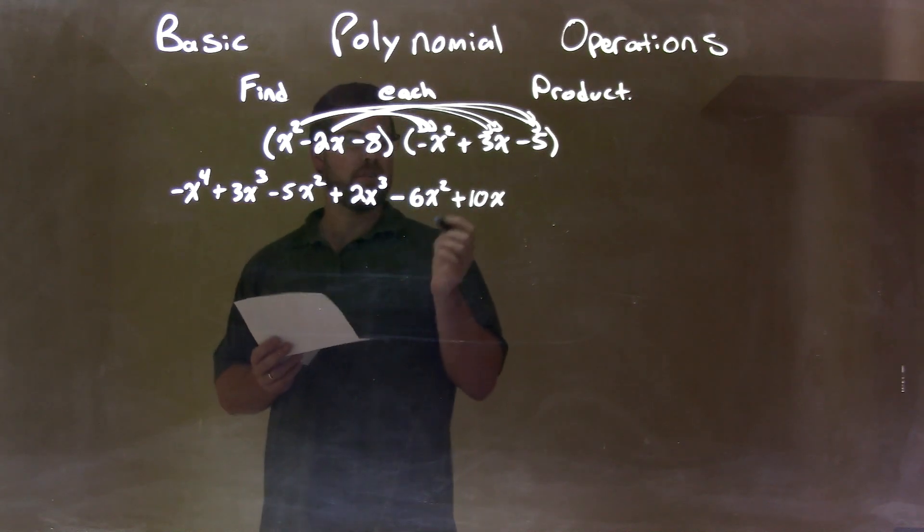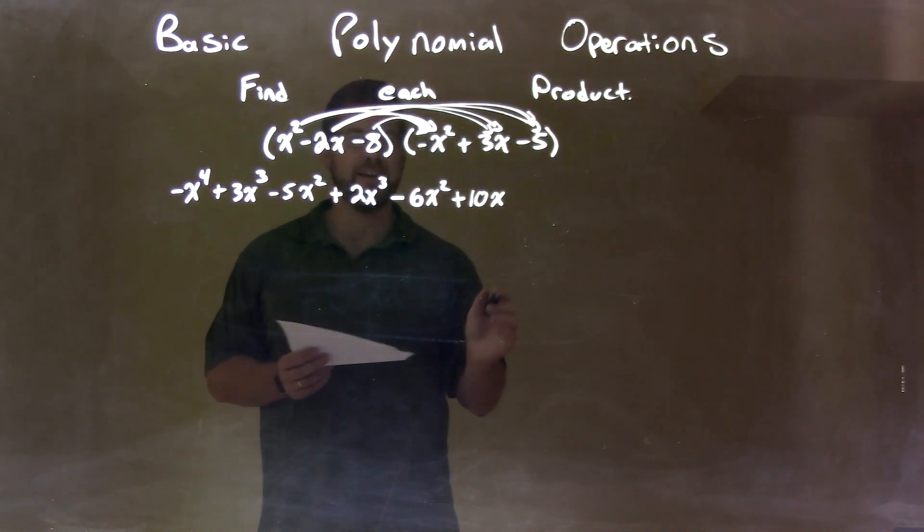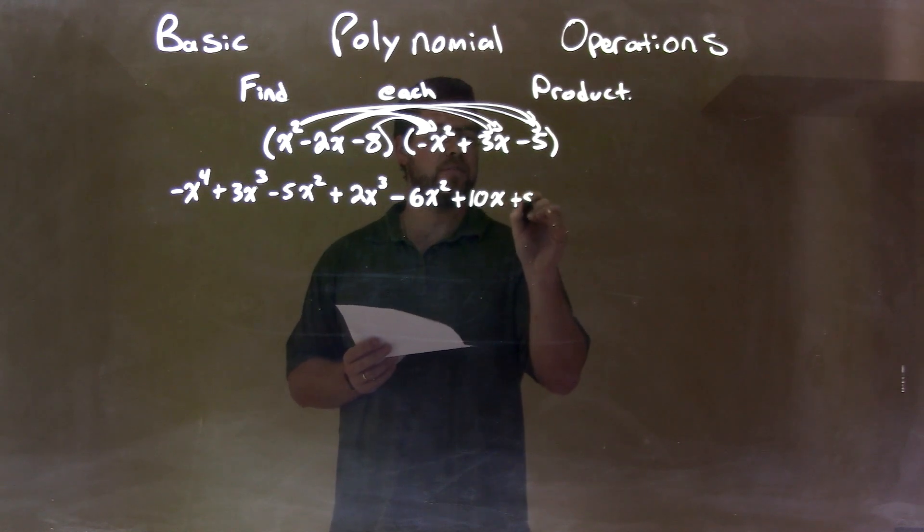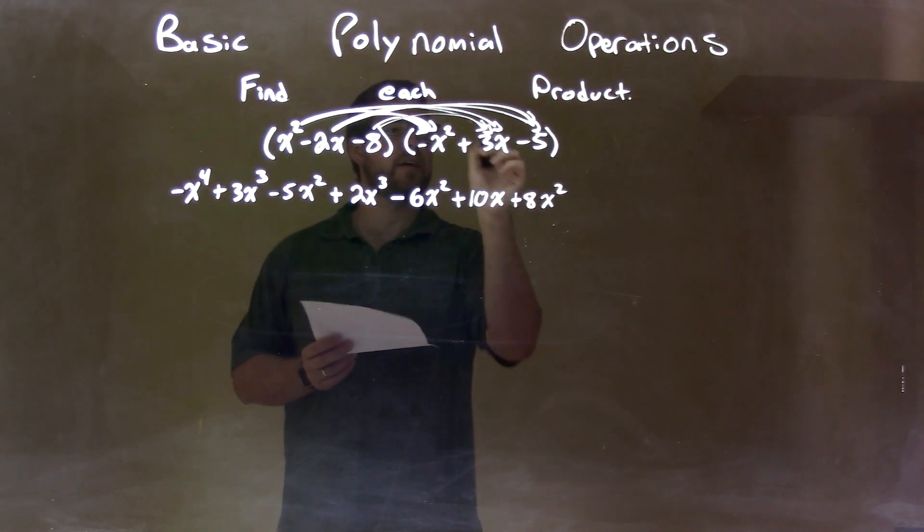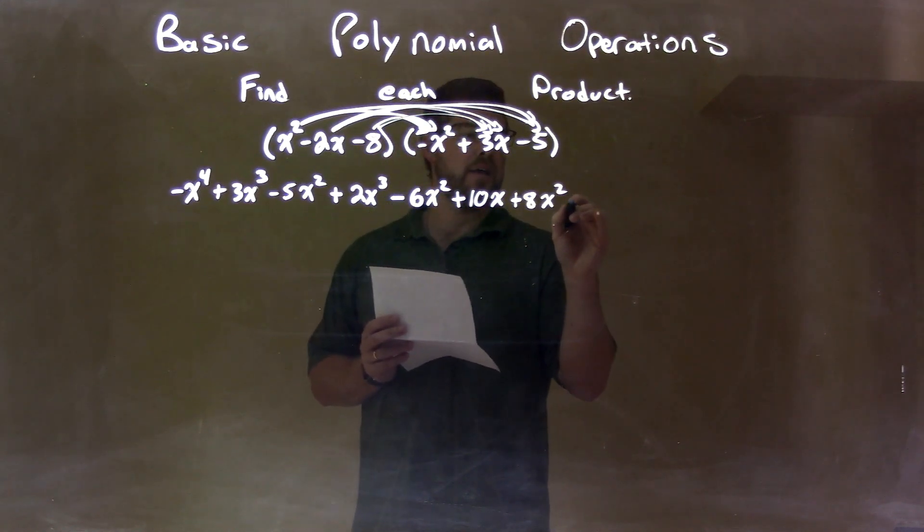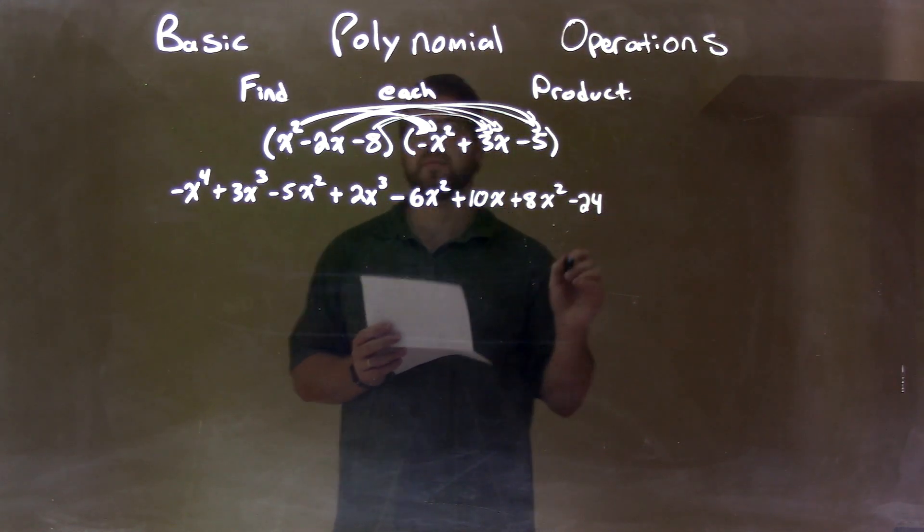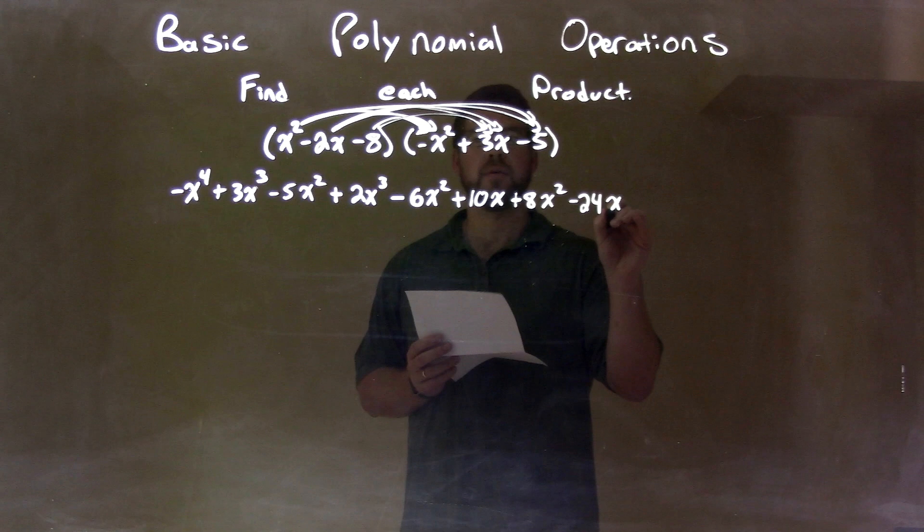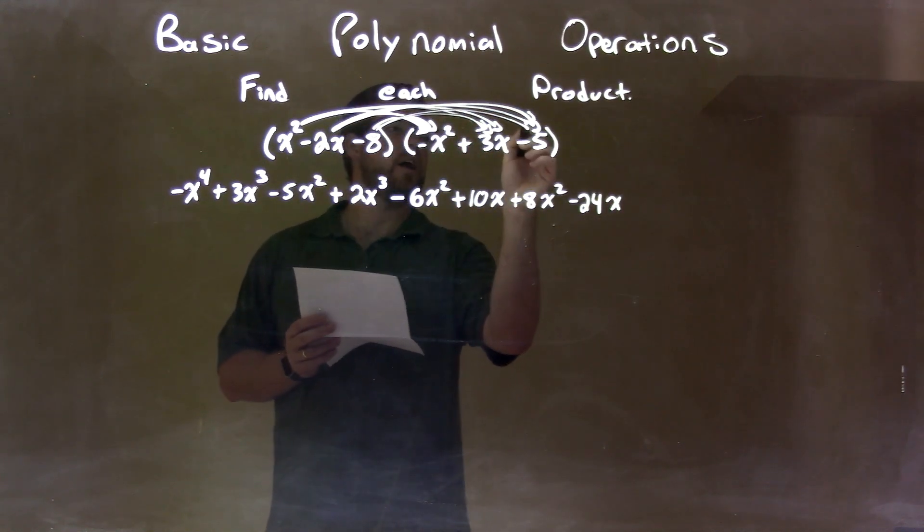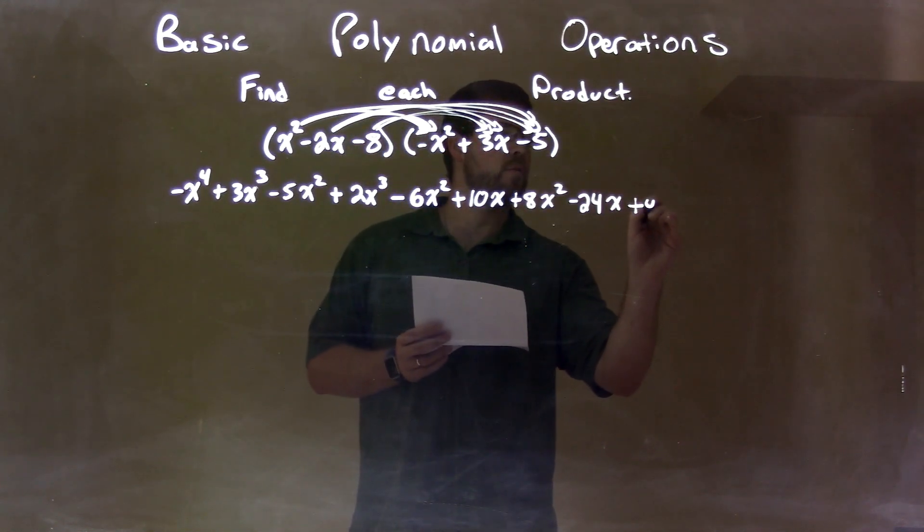So, lastly, we deal with a negative 8. Negative 8 times a negative x squared is a positive 8x squared. Negative 8 times a 3x is a negative 24x. And, negative 8 times a negative 5 is a positive 40.